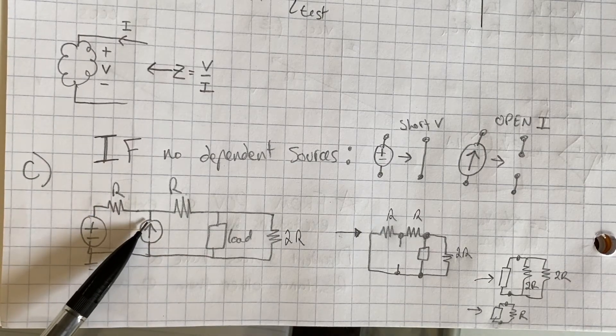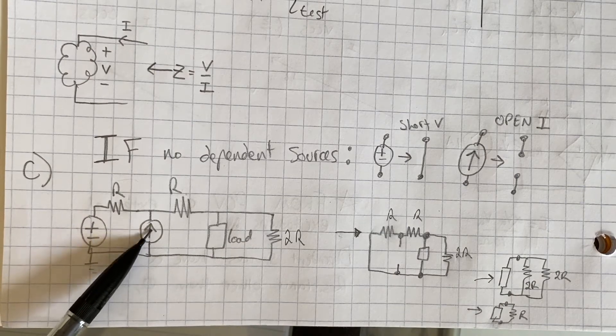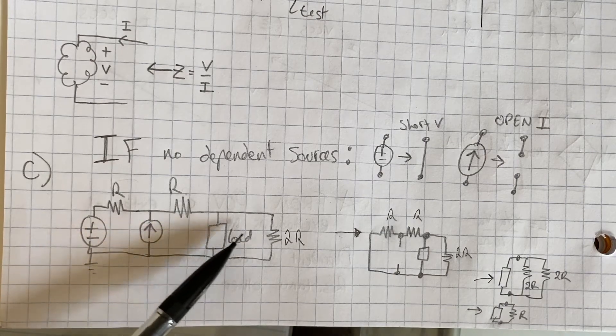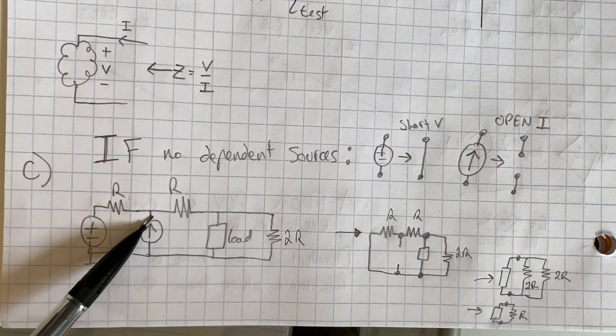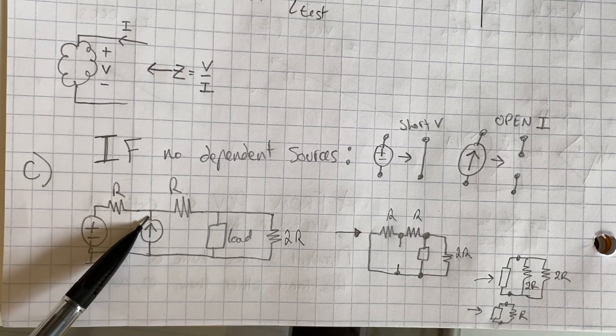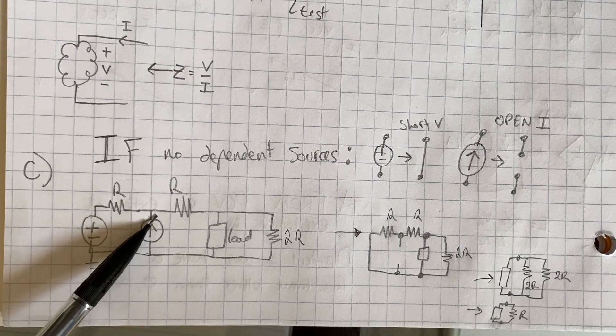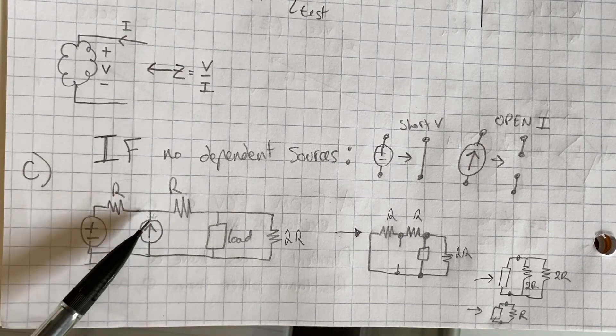The current source, however, only provides the current that's specified by the source. So if another excitation current tries to enter this source, it can't. So it has infinite impedance against other currents entering that node.